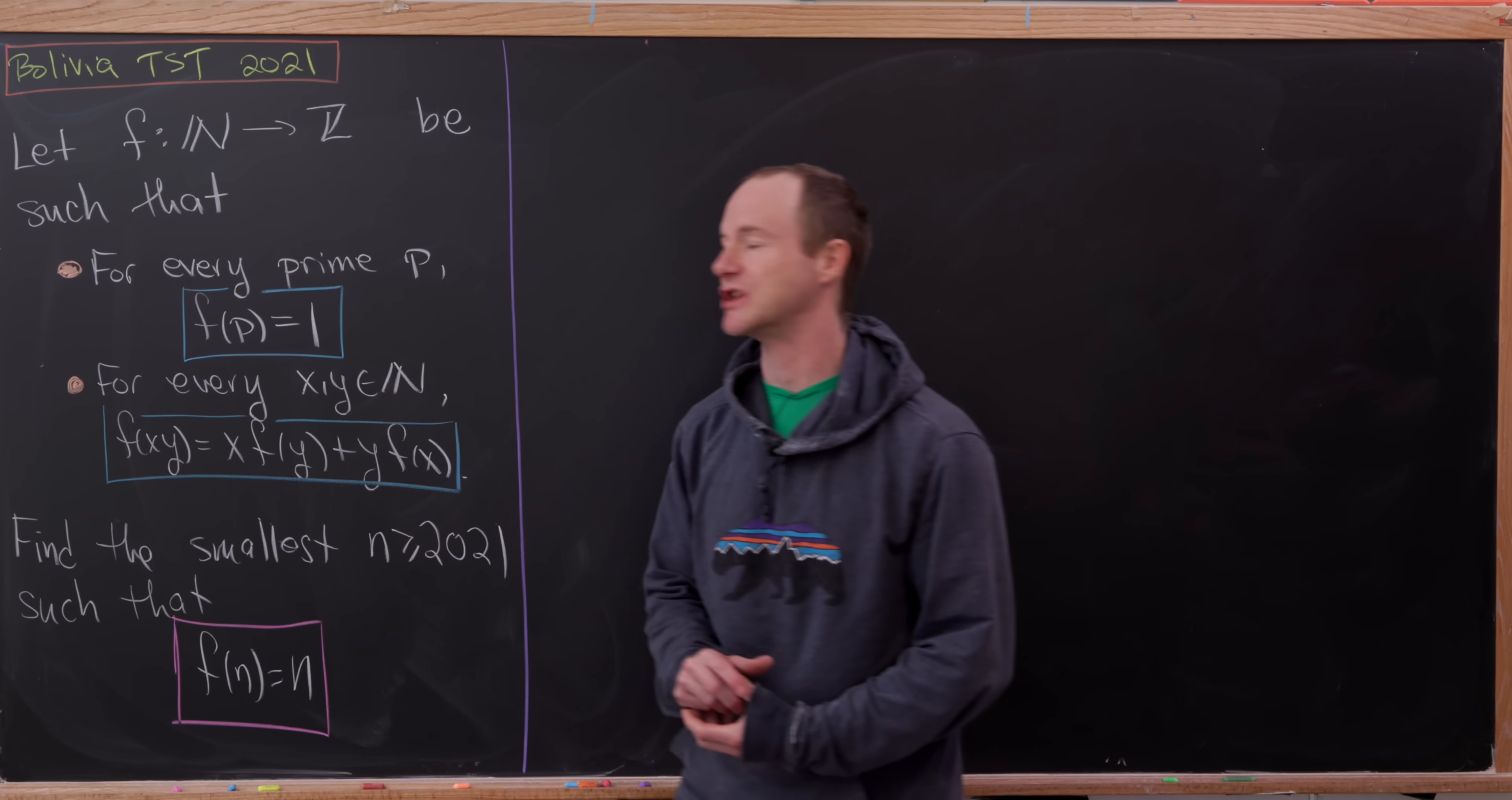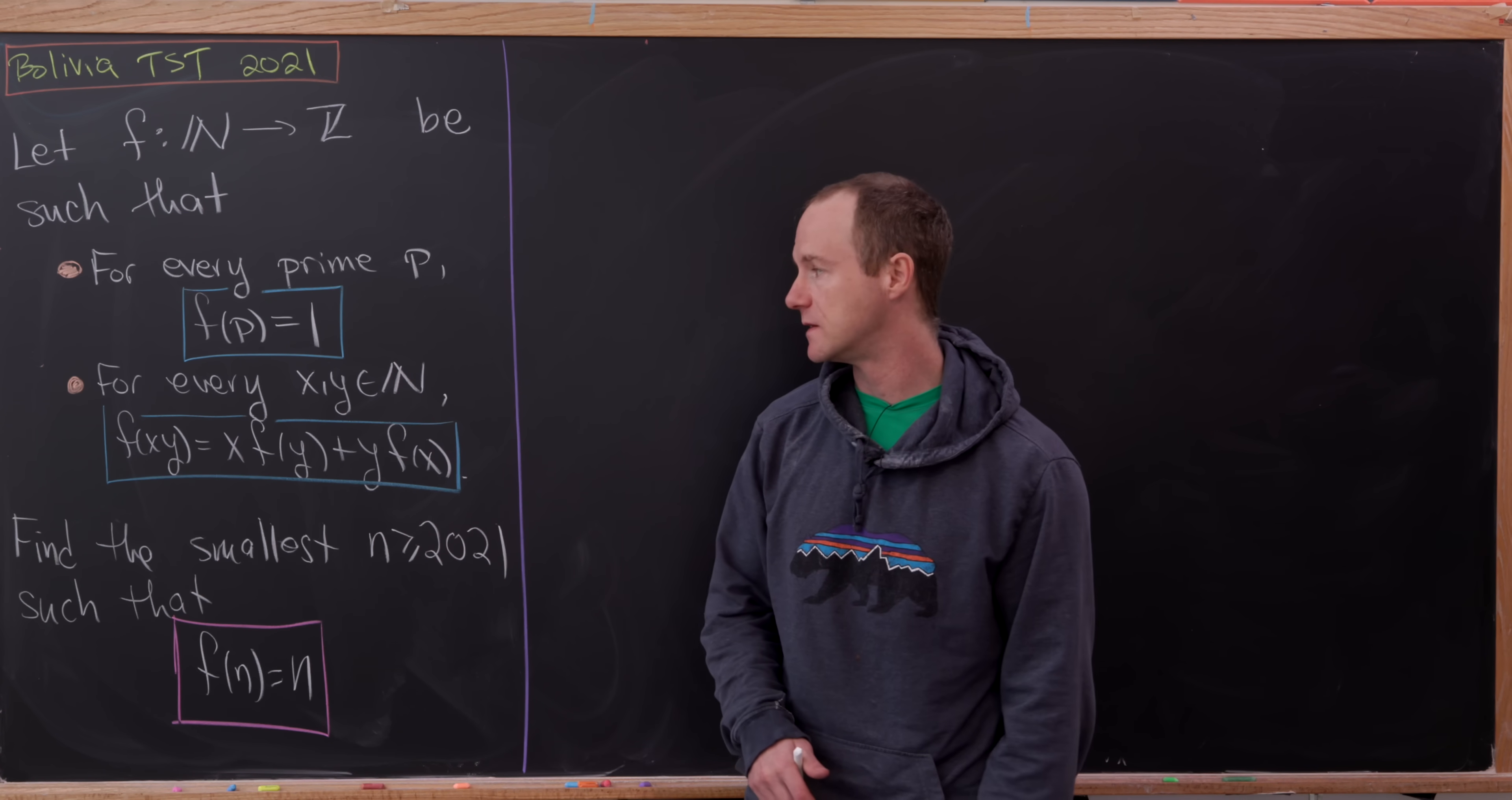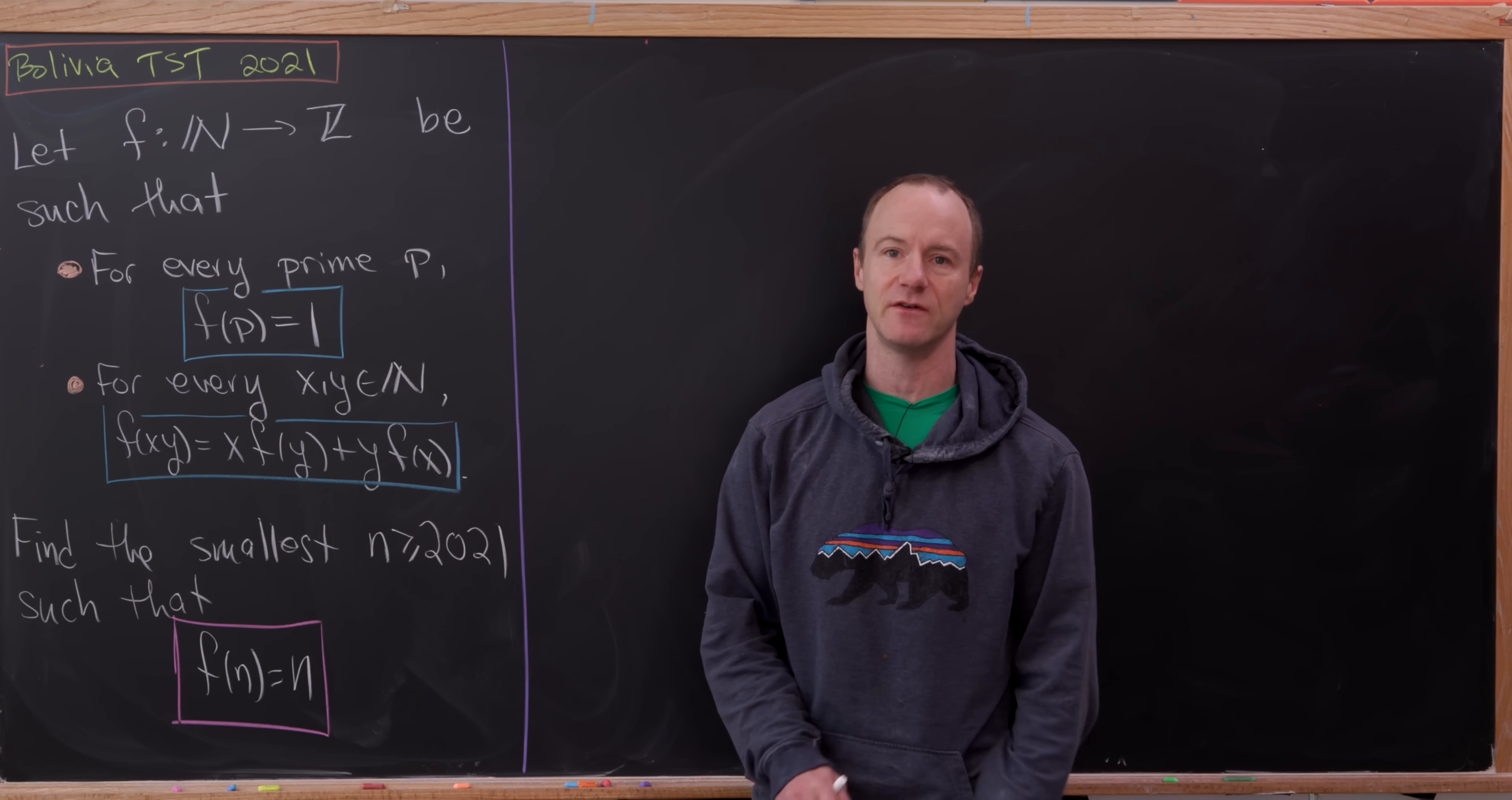So let's suppose we've got a function f. It goes from natural numbers to integers and it satisfies two rules. First, for every prime p, f(p) is equal to one. And then for every natural number x and y, we have f(xy) equals x times f(y) plus y times f(x).